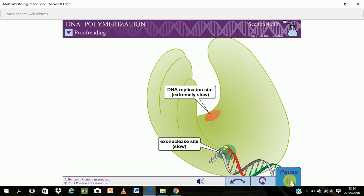The exonuclease site removes incorrectly base paired nucleotides starting from a 3' DNA end, and is therefore called a proofreading exonuclease.